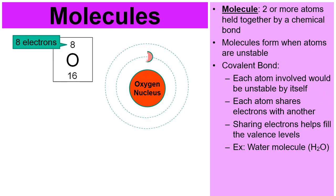From the periodic table, I know that oxygen has eight electrons. So I can draw two electrons in level number one, and then one, two, three, four, five, six electrons in level number two. Oxygen's unstable.